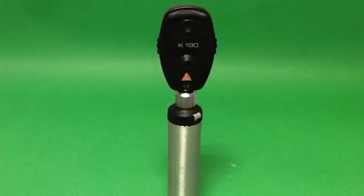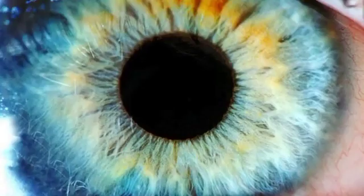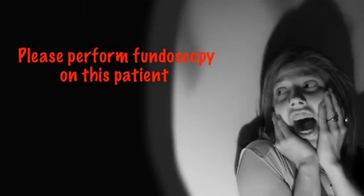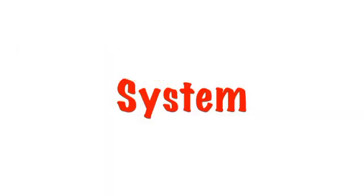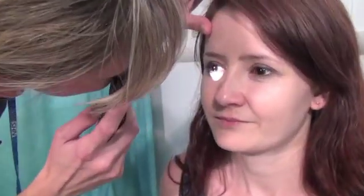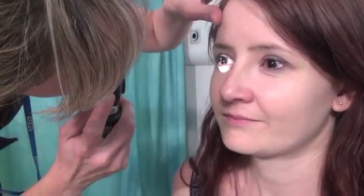Repeat the ophthalmoscopic examination on the patient's right eye using your right hand and right eye. Now, how an ophthalmoscope works and how you can use this instrument to examine an eye. Many students, and qualified doctors for that matter, may tremble at the prospect of examining an eye. However, all you need is a system, a basic knowledge of the anatomy of the eye, and the ability to use an ophthalmoscope. Simple in theory, but clear instruction and practice in this skill is essential.